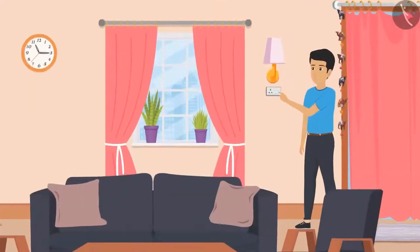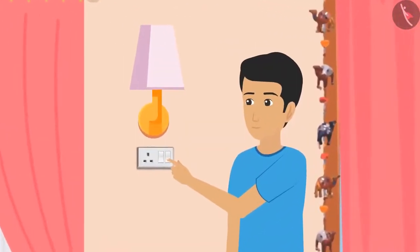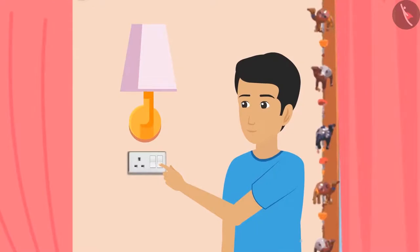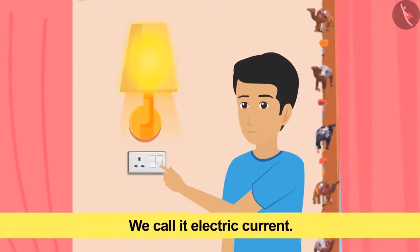If everything that flows has current, what will they call the current that glows the bulb when you put on the switch? We call it electric current.